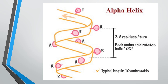The distance between turns in the alpha helix is called the pitch, and it spans 3.6 amino acid residues, measuring 5.4 angstroms. Each amino acid in the helix rotates 100 degrees, so to complete a full 360-degree turn, 3.6 amino acids must be present. Therefore, in an alpha helix with 10 turns, 36 amino acids exist.